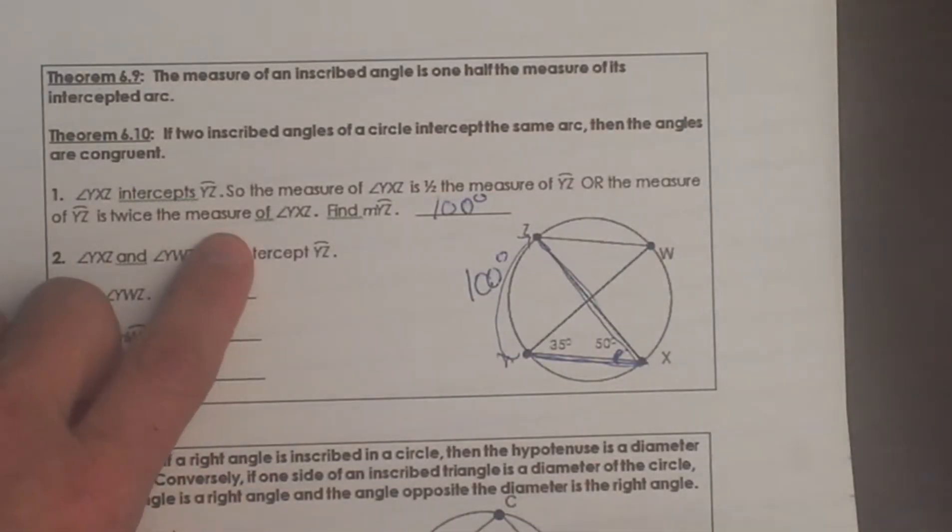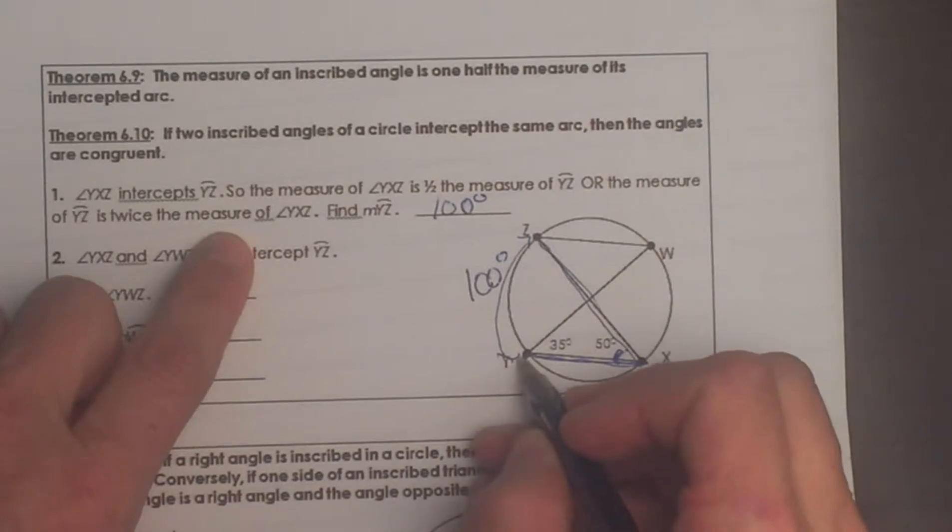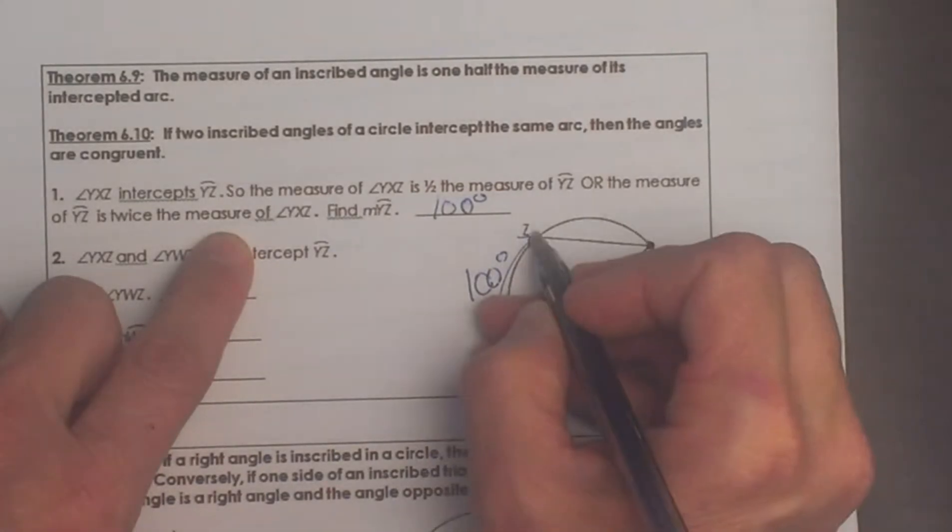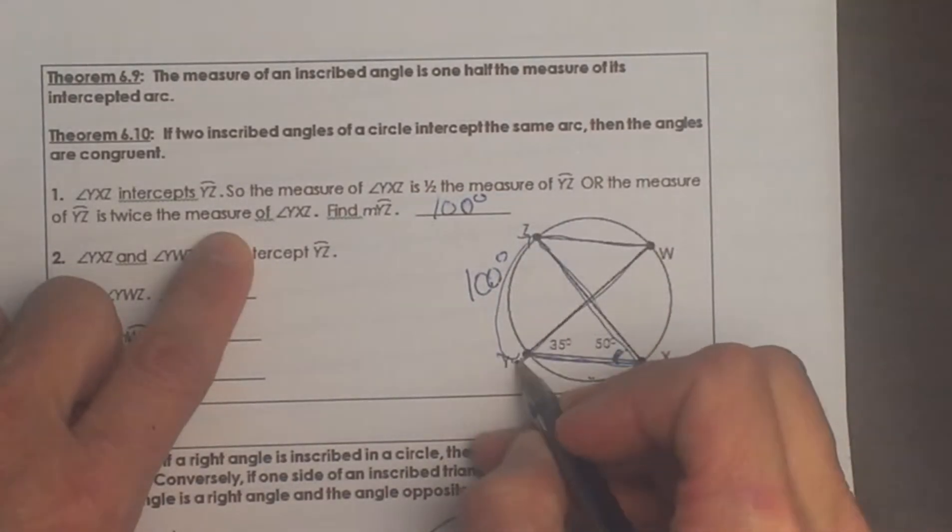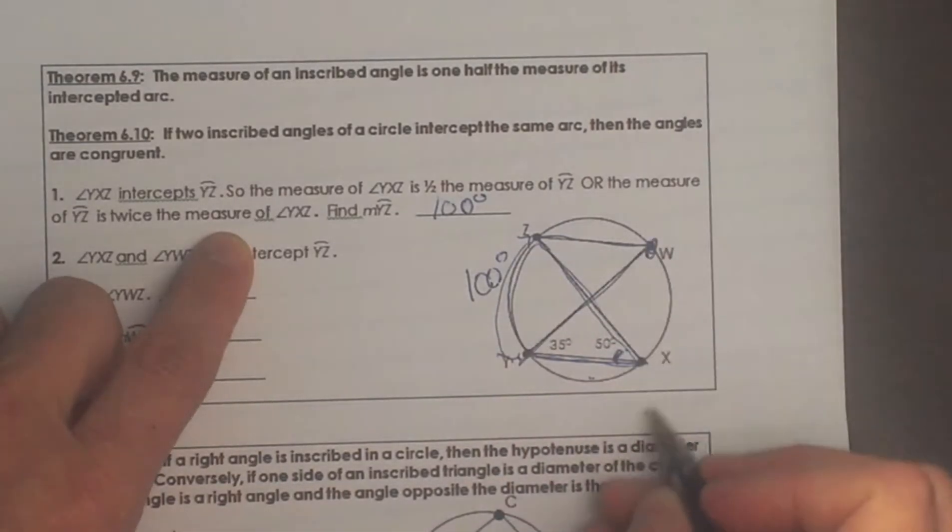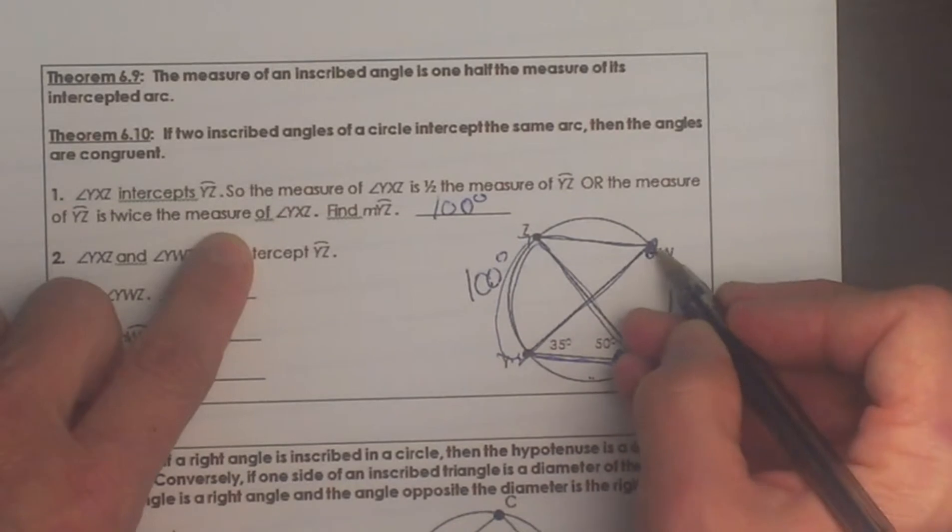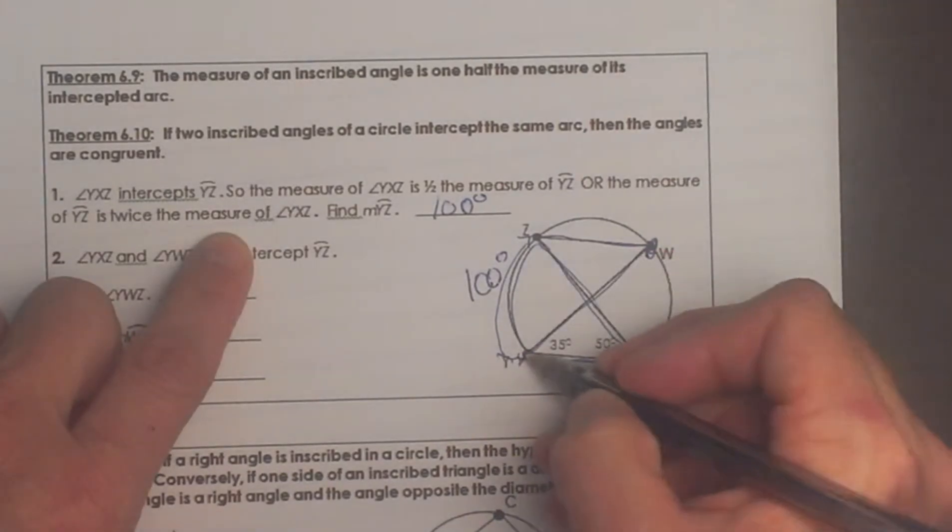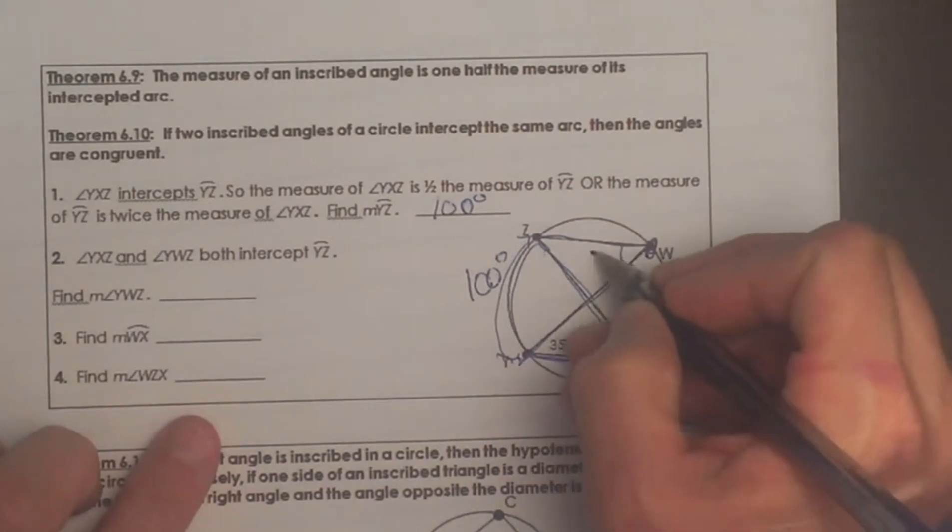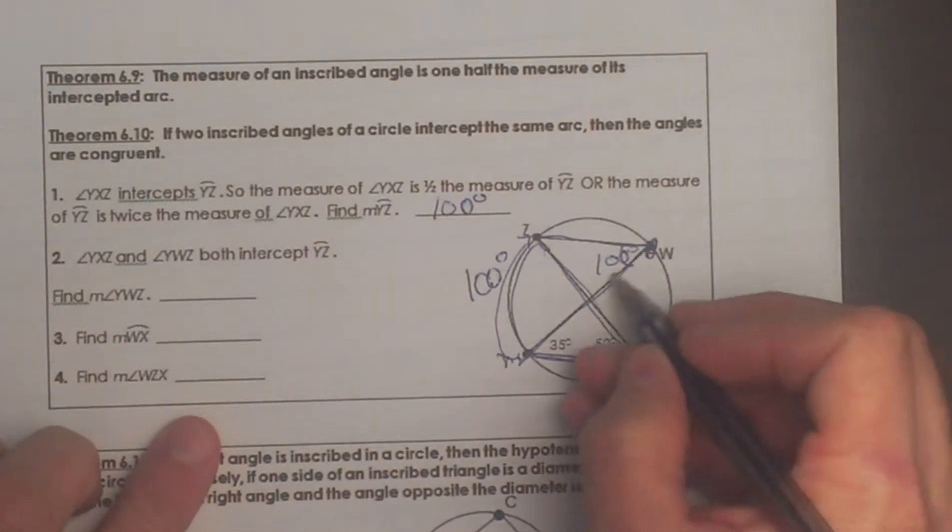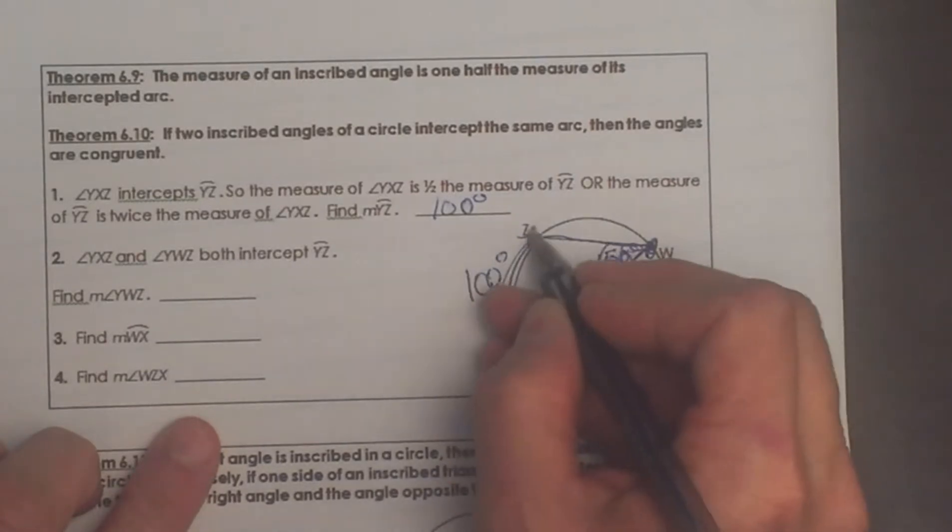Now the other way you can look at it is from y to w to z. Notice y, w, z intercepts the same arc doesn't it? It has just a different vertex. The vertex instead of being x is w but it still has y and z as the two endpoints.